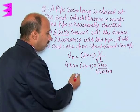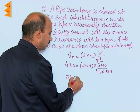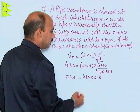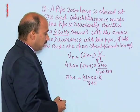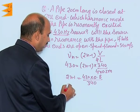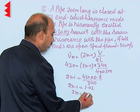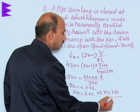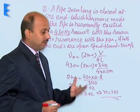Solving this: 2n − 1 = 430 × 0.8 / 340. This gives 2n − 1 = 1.02, so 2n = 2.02 and n = 1.01, which we can take as n = 1. So the first normal mode of vibration is resonantly excited by the 430 Hz source in the closed organ pipe.